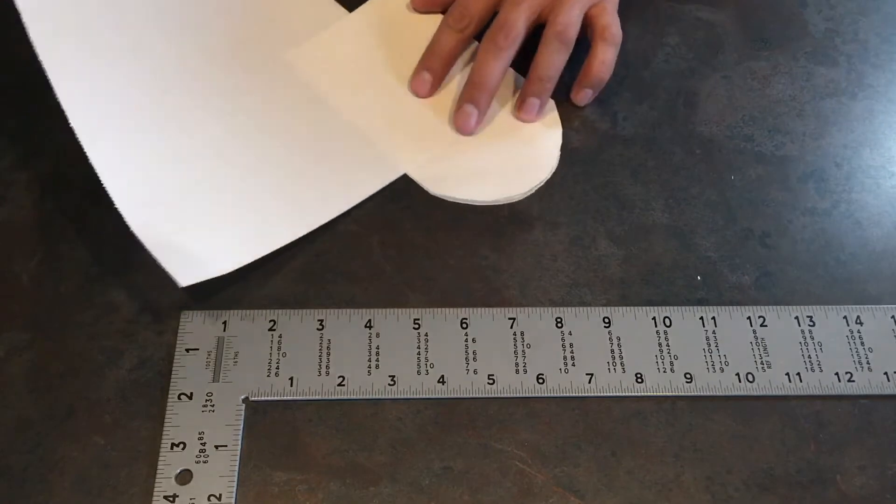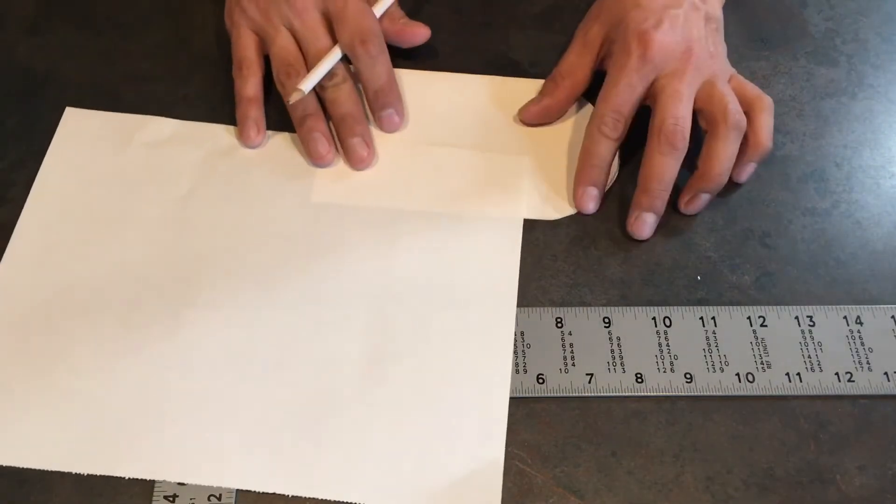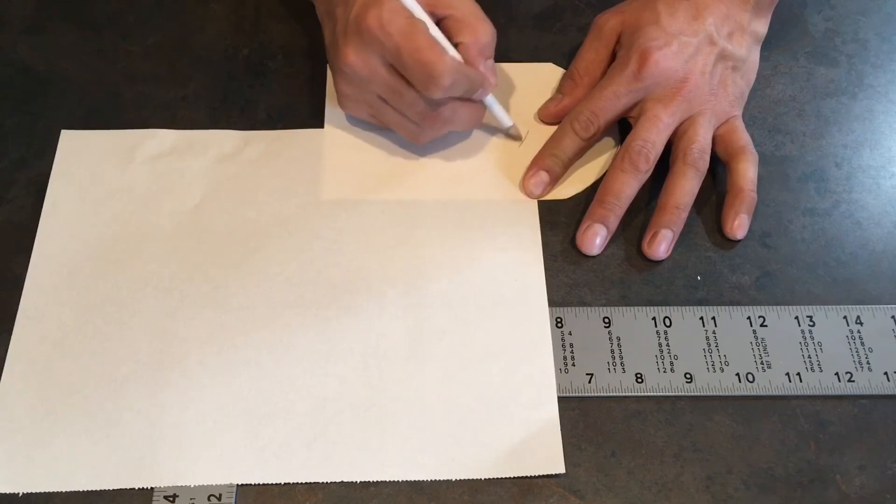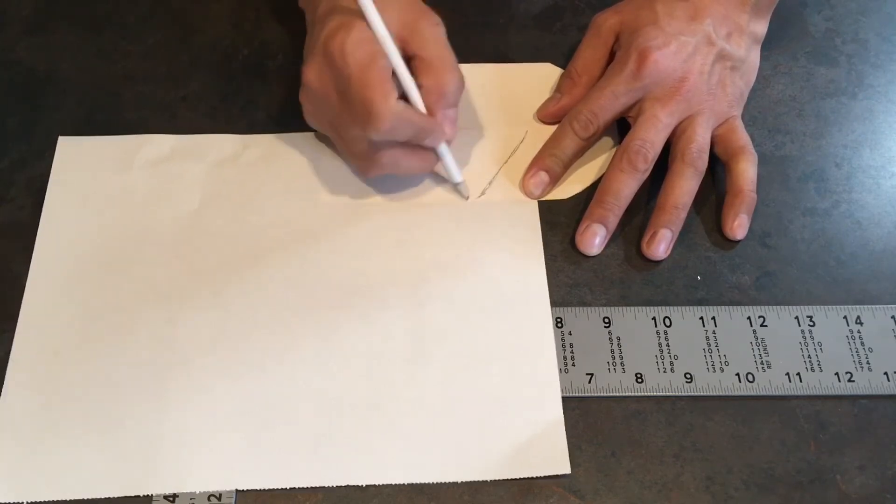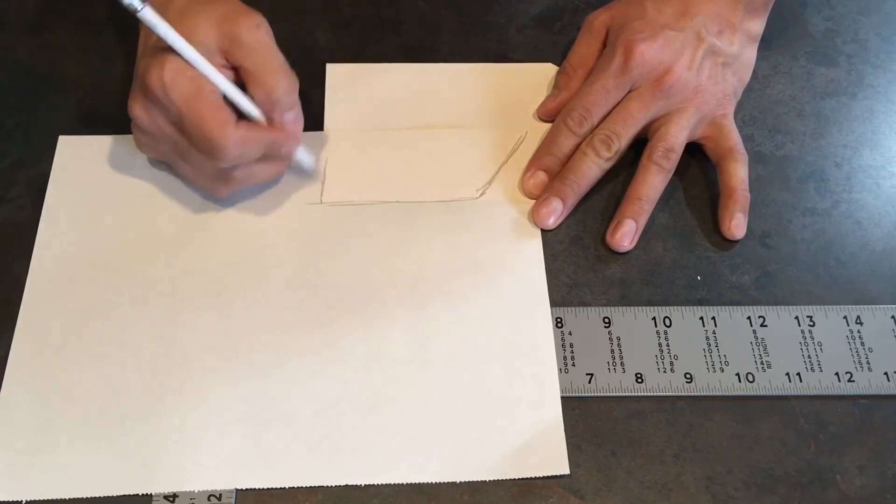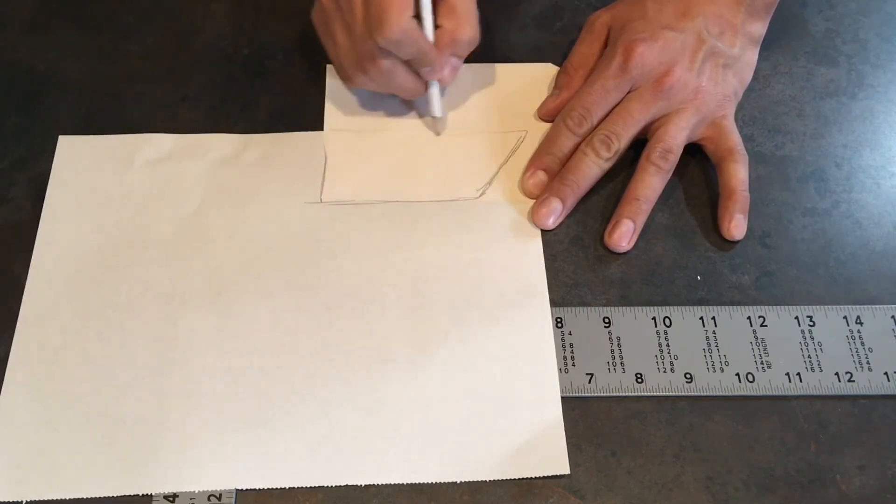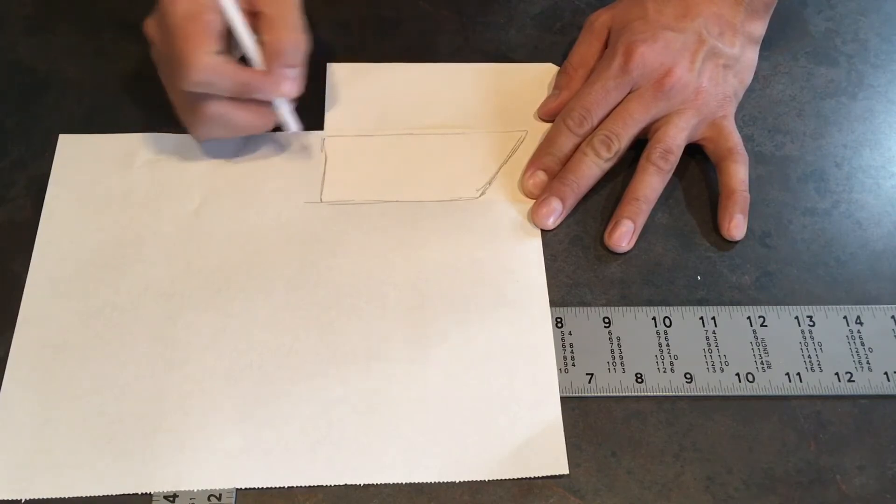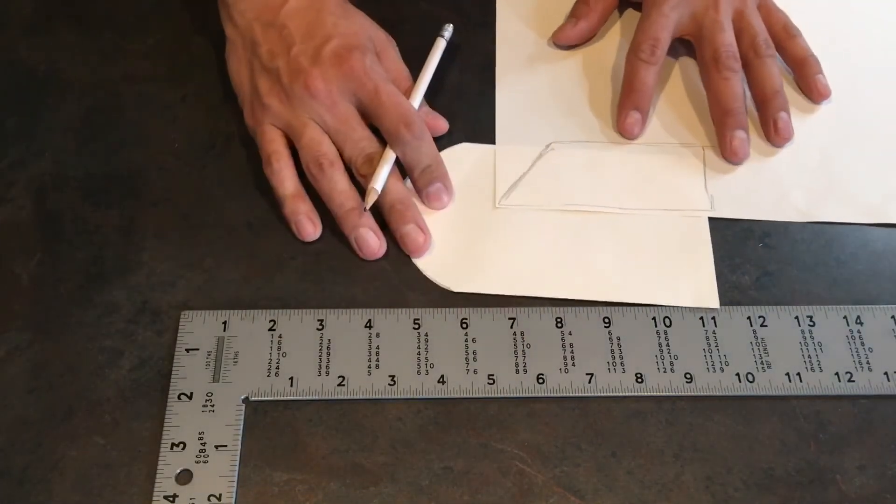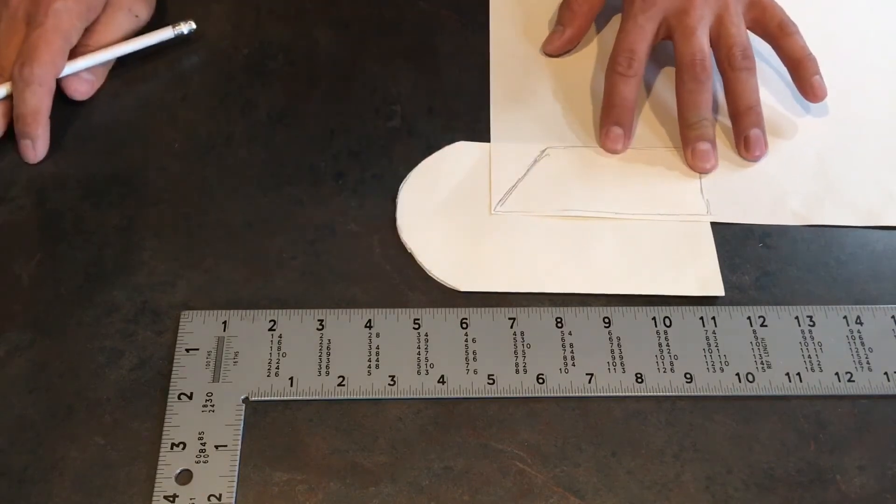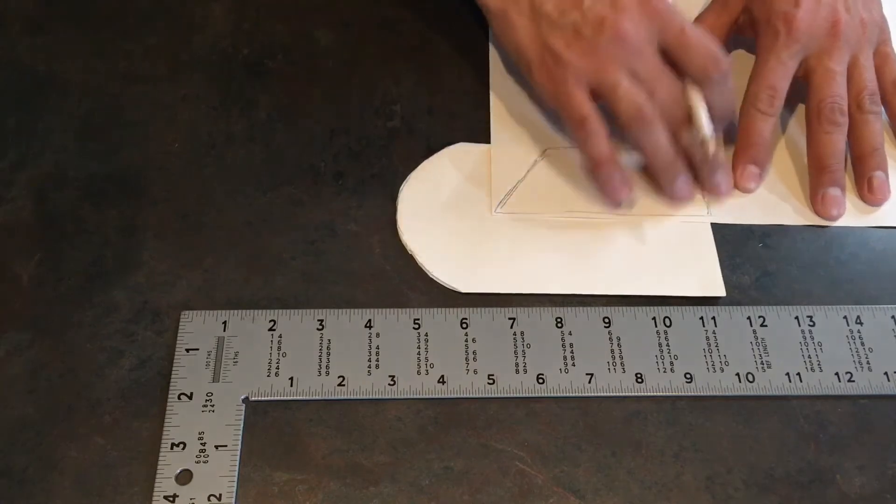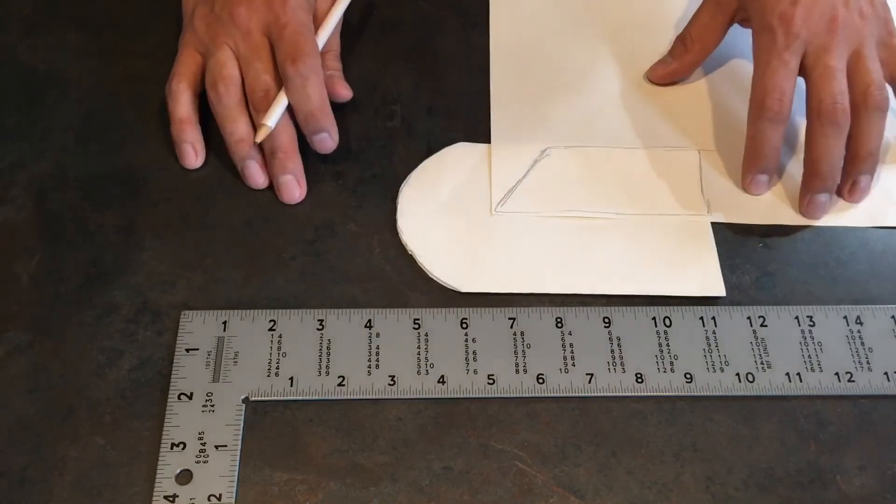Just like that. You're going to draw this pattern here with a slight angle, just about like that. It can be a little longer because you're going to trim off excess when you start sewing anyway.